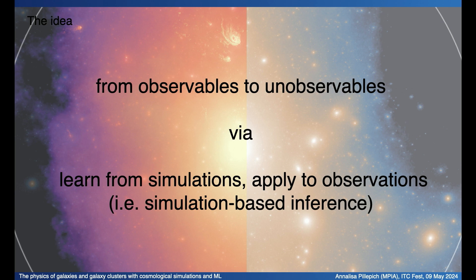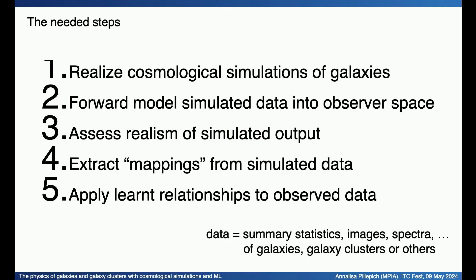The whole idea of my talk is to show how it might be possible to infer unobservable physical properties of galaxies from observables via simulation-based inference — namely by learning from simulations to then apply to observations. This requires a series of steps: making the simulations, forward modeling the simulation data in observer space, assessing the realism of simulation output, extracting mappings between observables and unobservables from simulation data, and ultimately applying this relationship to observed data.